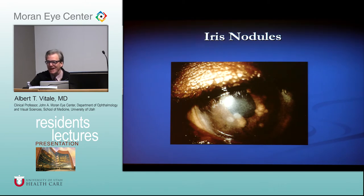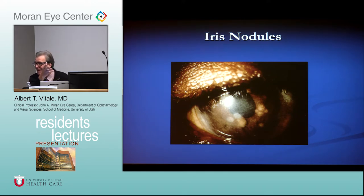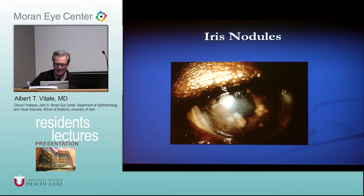Iris nodules — they love to ask about the difference between Koeppe and Busacca nodules. This is an example of a patient with sarcoidosis and granulomatous inflammation. Koeppe nodules are on the pupillary margin. Busacca nodules are in the stroma.